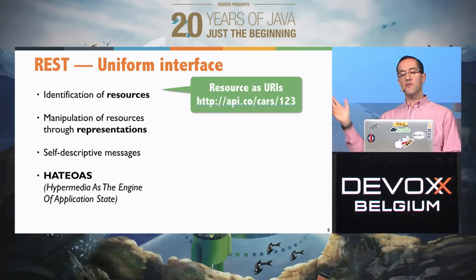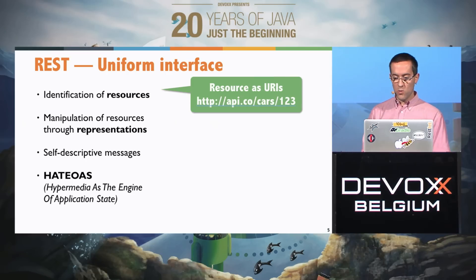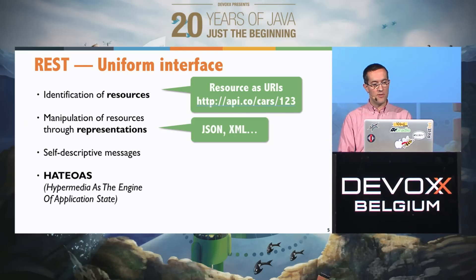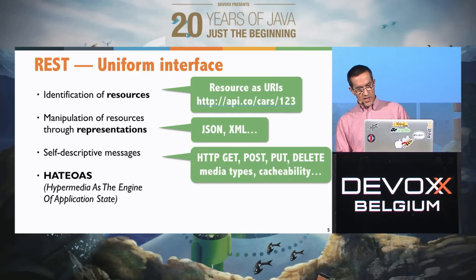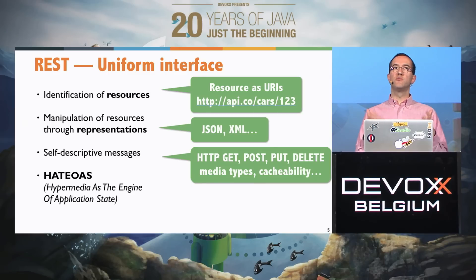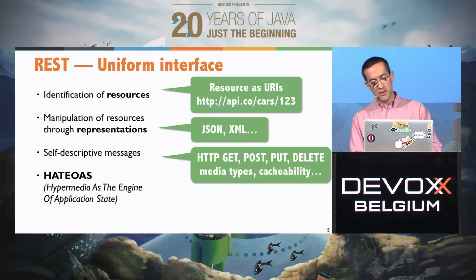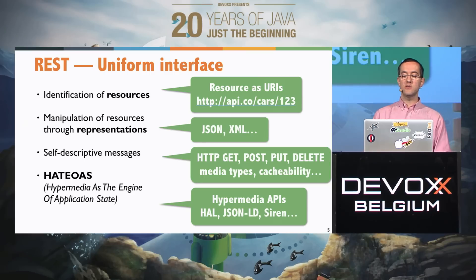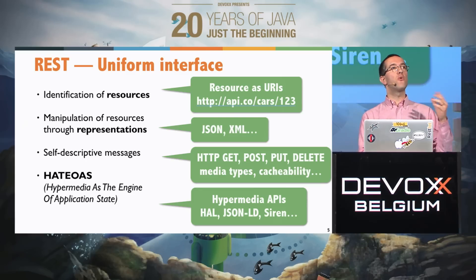A resource — here I can identify, let's say, a certain car identified with ID 123. For representations, I could represent that car with a JSON payload, an XML payload, or even a JPEG or GIF image. Self-descriptive messages are also about how you deal with those resources — through HTTP methods like GET, POST, PUT, DELETE. Those are the four most common ones, but there are other interesting ones like OPTIONS, PATCH, HEAD, etc. Near the end we'll also speak about hypermedia and how you can make your API more easily discoverable and navigable between resources.